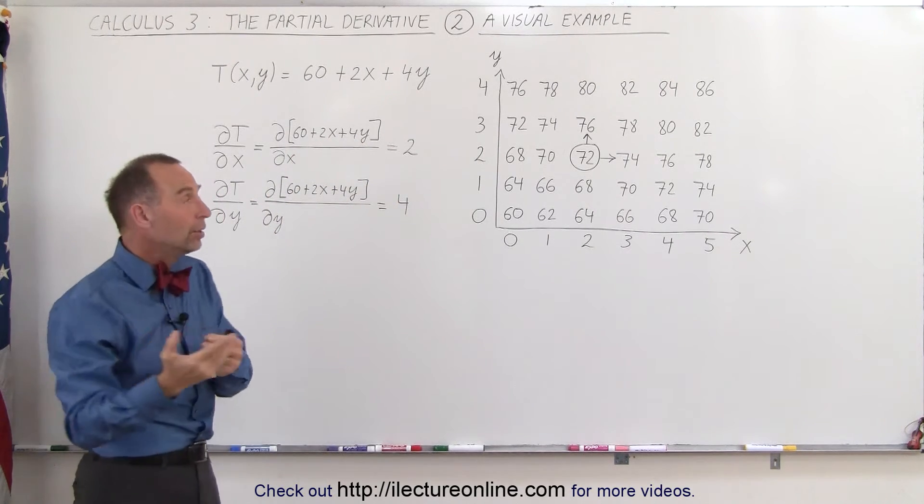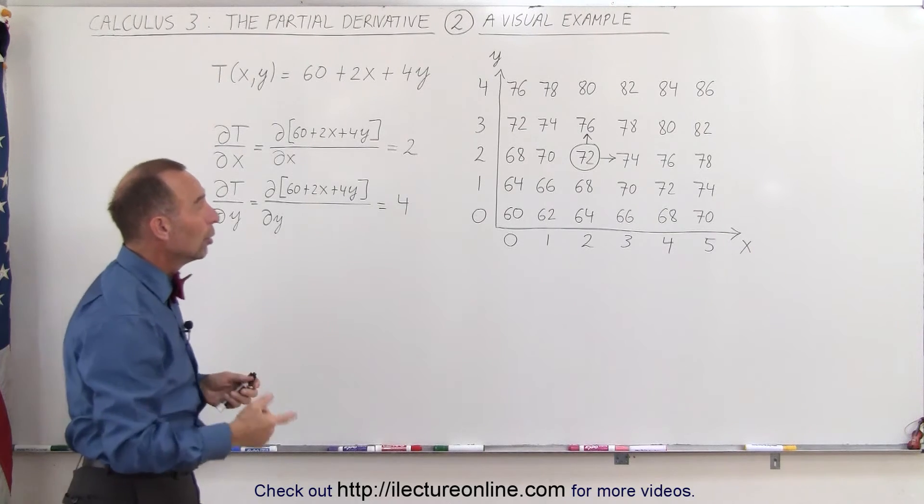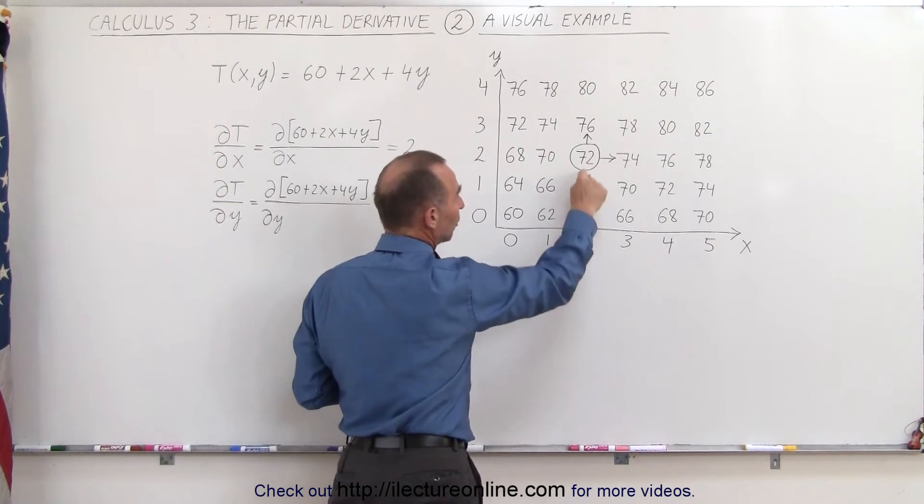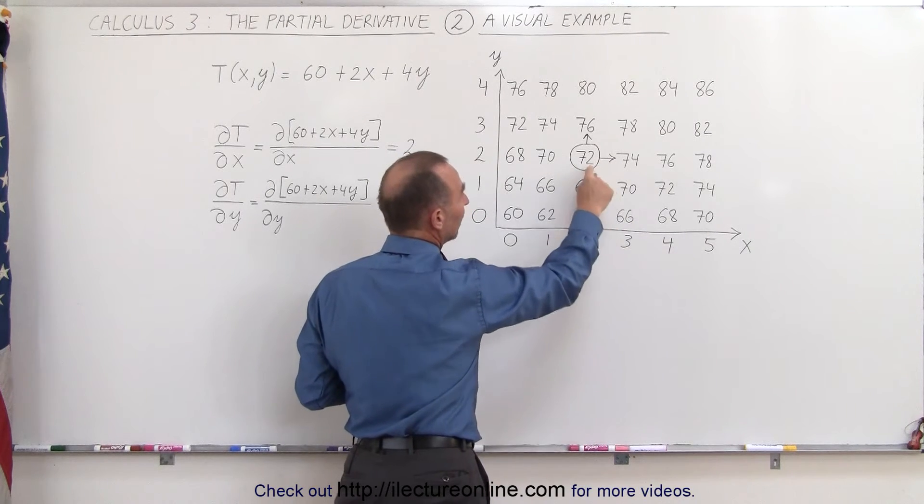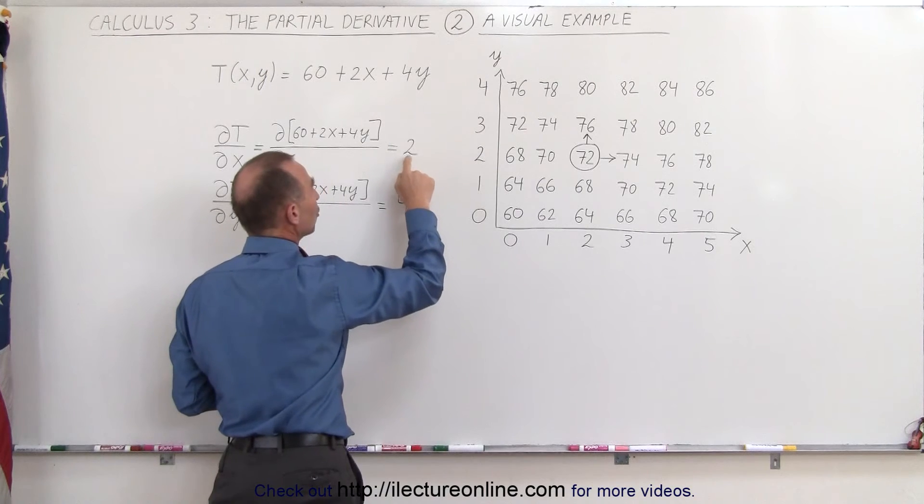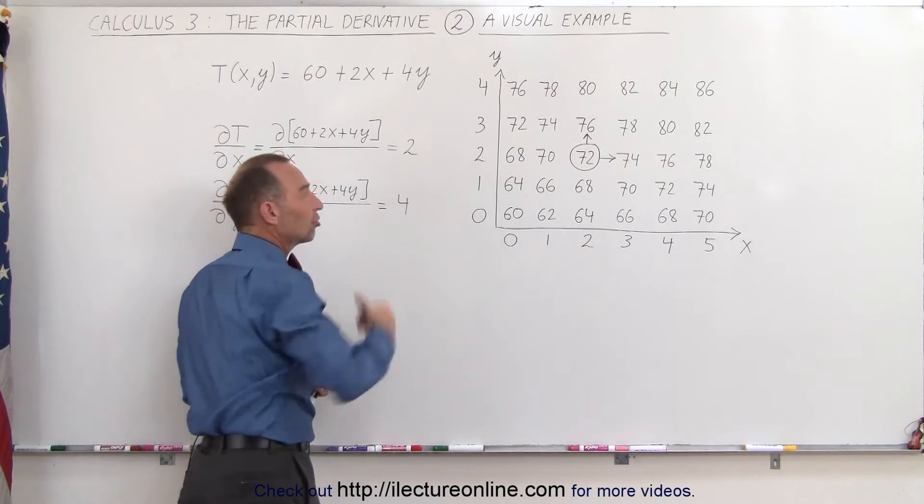Which means when x changes by 1, the temperature changes by 2. You can see if we start at this spot right here, when x is equal to 2, and then we change the x value to 3, it goes from 72 to 74 degrees. Therefore, you can see that the temperature changes by 2 units when x changes by 1.